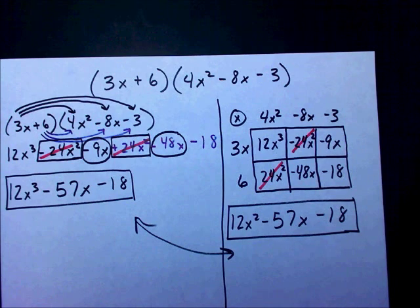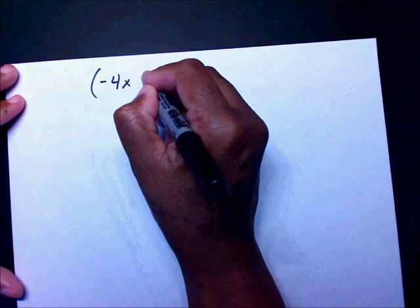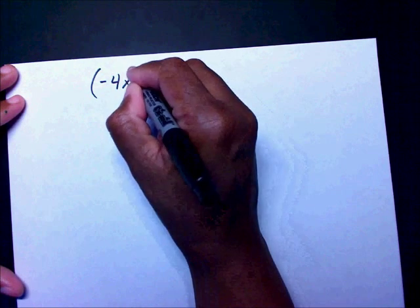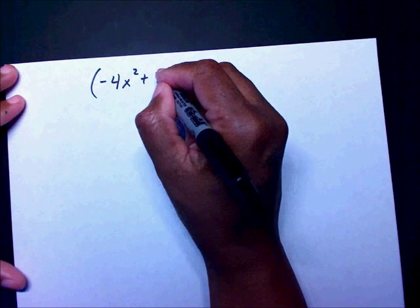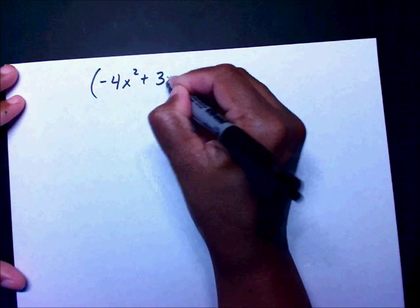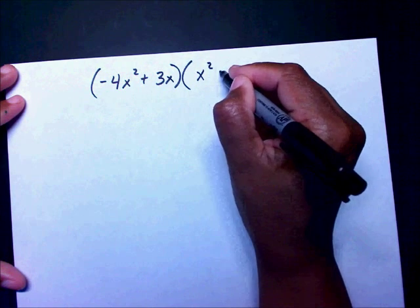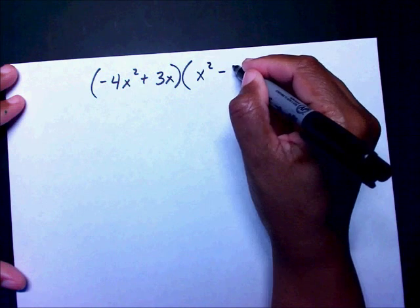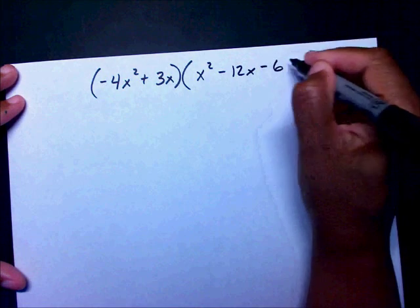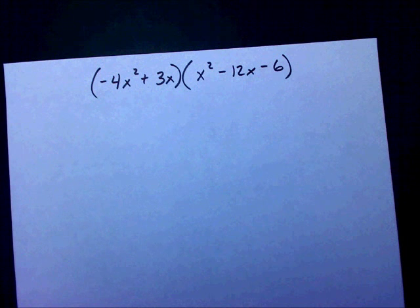Now let me give you one to work. You decide which method to use, but I'm only going to use the box method. Multiply negative 4x squared plus 3x times x squared minus 12x minus 6. Please pause the video and multiply those two polynomials.